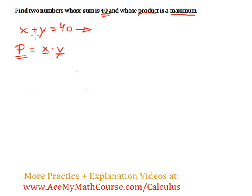Let me just subtract y from both sides of the equation. So these cancel out. So I get x is equal to 40 minus y.